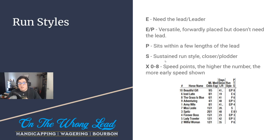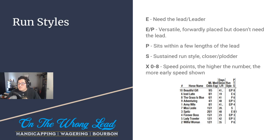The speed points tell you how much early speed the horse shows. Speed points go from zero to eight. An E8 horse is one that consistently goes to the lead — eight is the most points you can have. Generally from my experience, if you see a lot of sixes, sevens, and eights, that's when you start to figure out this pace might be fast — this might be a hot pace.